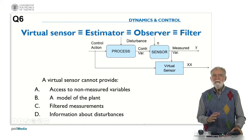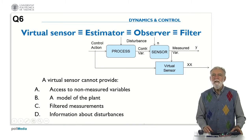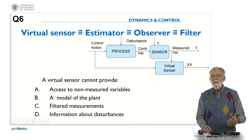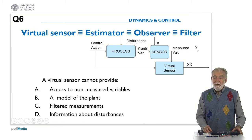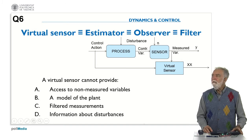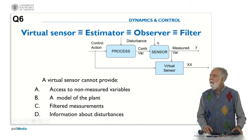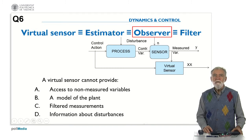We have seen that a virtual sensor has many different applications — as estimator, as observer, or as filter. In fact, in the literature and in different frameworks, it is called in these ways. As we see in the figure, a virtual sensor may provide access to non-measured variables — this is the idea of the observer. There are some internal variables that cannot be measured, but we can observe these non-measured variables.